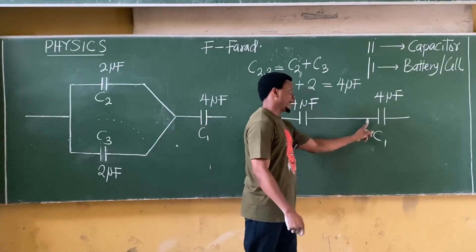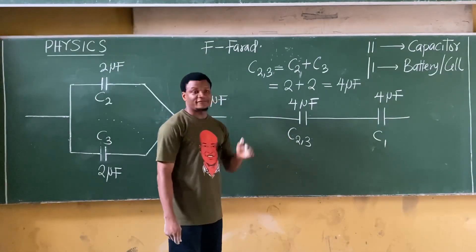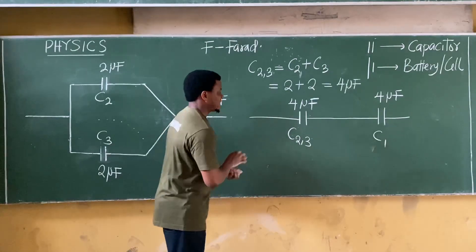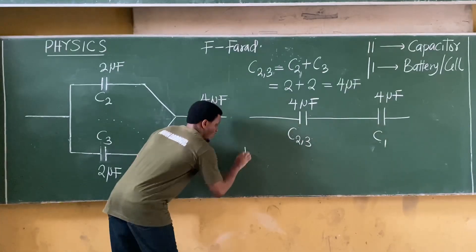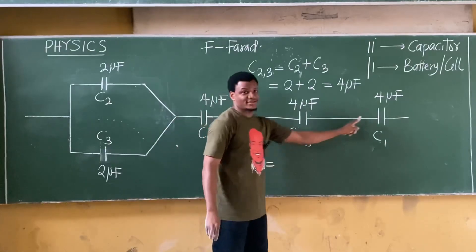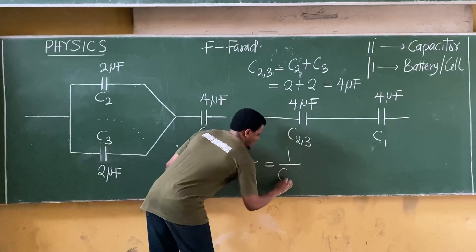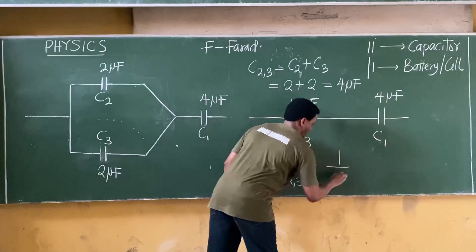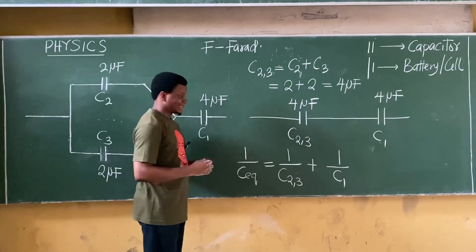Whenever capacitors are in series, to get the equivalent we take the inverse. We sum the inverse of each capacitor: 1 over Ceq equals 1 over C23 plus 1 over C1. Let's substitute the values and see what we get.